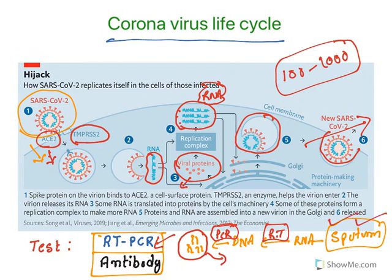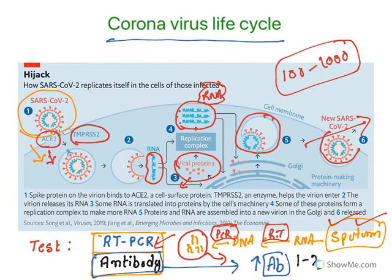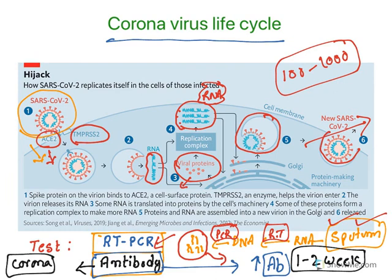RT-PCR is the test that confirms whether someone has a coronavirus infection. The next test is the antibody test or serological test. Whenever a viral infection occurs, the body increases levels of antibodies to fight the virus. However, there are problems: it takes at least one to two weeks to make antibodies, and these antibodies are non-specific — all coronavirus family viruses, including SARS, MERS, and COVID-19, will give a positive test. This could give a false positive. Therefore, the reliable test is the RT-PCR test.